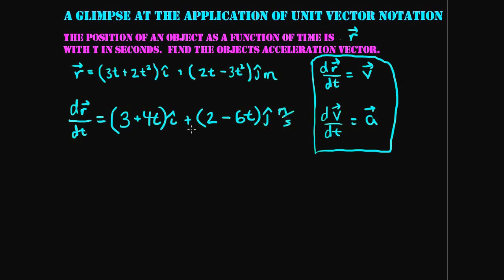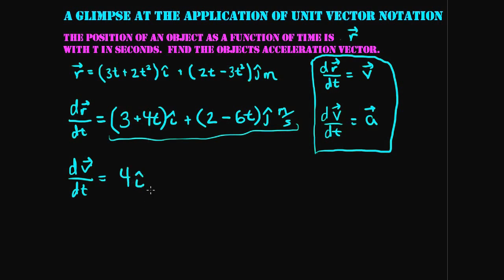At any point in time, plugging t in gives the velocity at that time. We take one more derivative to get the acceleration vector. The derivative of the i-hat components: the derivative of any constant is zero and the derivative of 4t is 4, giving 4 i-hat. The derivative of the j-hat components: the derivative of 2 is 0 and the derivative of −6t is −6, giving −6 j-hat. So the acceleration vector is 4 i-hat minus 6 j-hat meters per second squared.